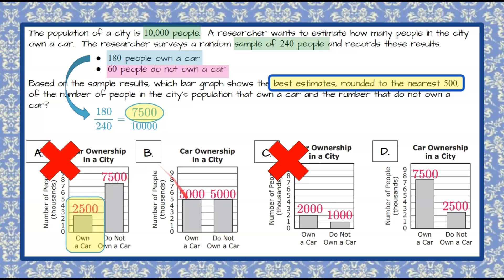Bar graph B is 5,000 does not match up so it cannot be bar graph B. We have 5,000 not 7,500 owning a car which leaves us one bar graph that could be the possible answer. We have 7,500 owning a car here.